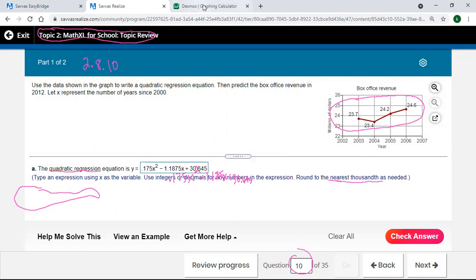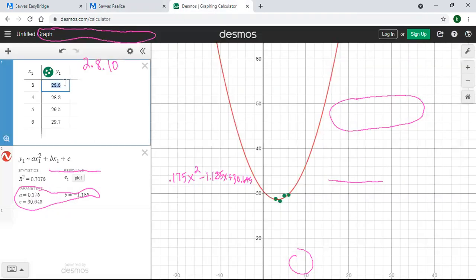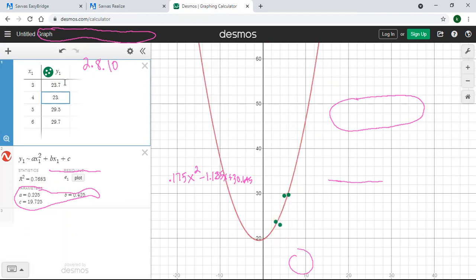So I was going to check that. The 23.7, 23.4, 24.2, and 24.6. That wasn't what I typed in. Let's go back to Desmos and fix that. All right, so it was 23.7, 23.4, 24.2, and 24.6.